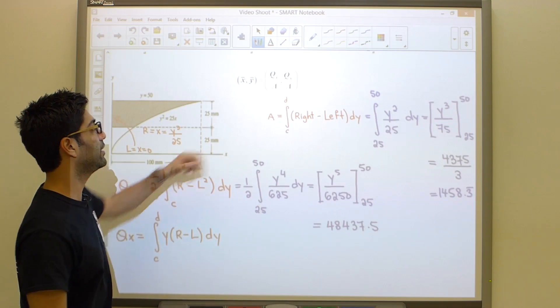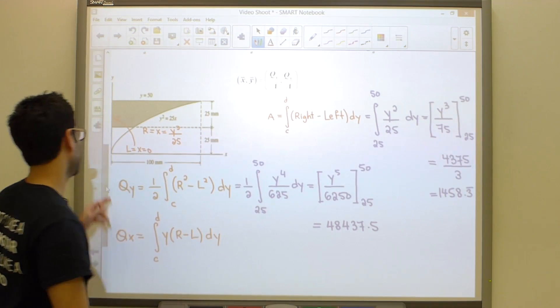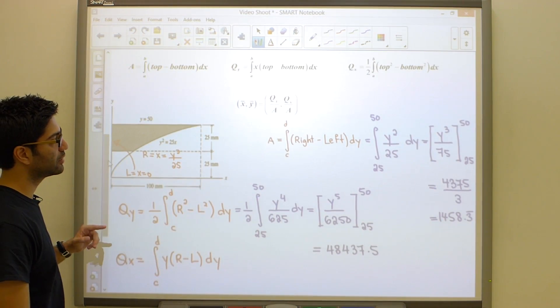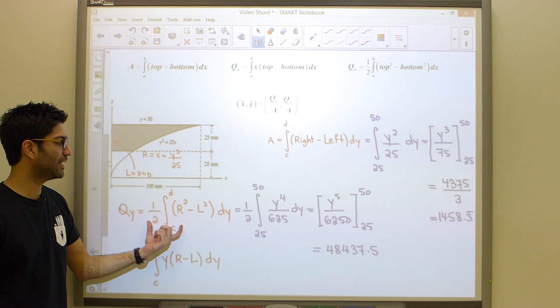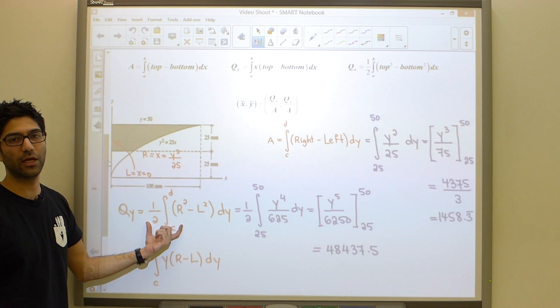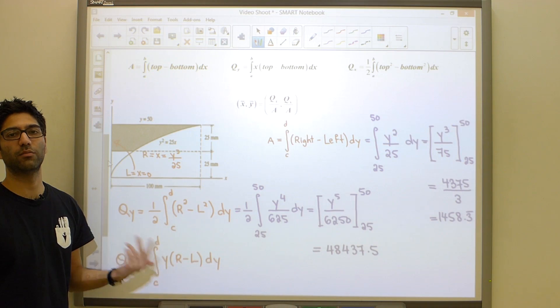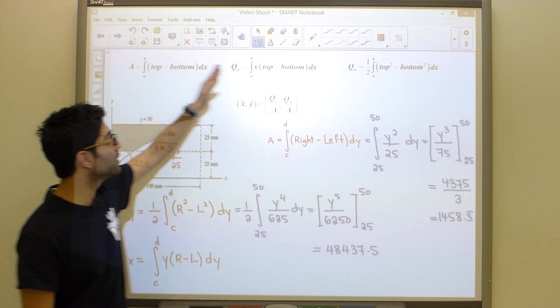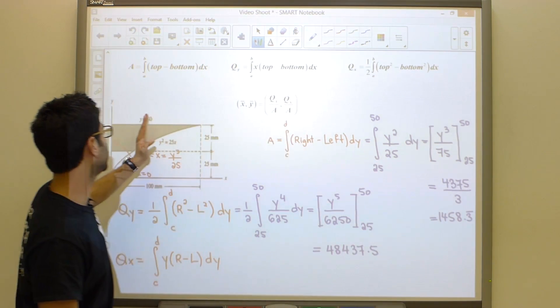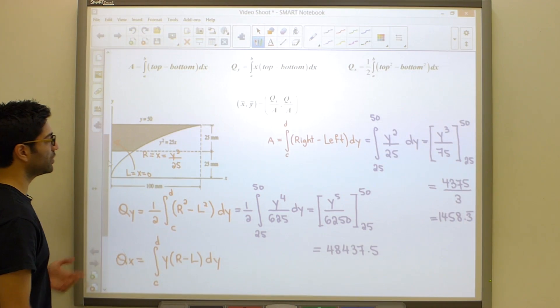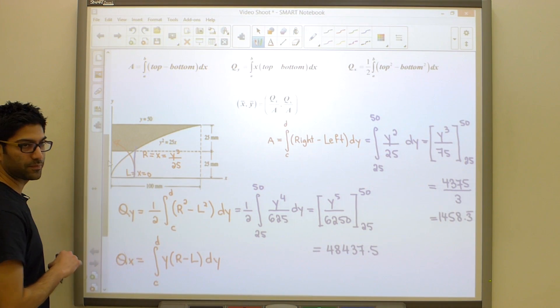Remember, x bar is just Qy over A. You just have to be careful that your Qy becomes this new formula when you're doing right minus left instead of top minus bottom. Now, you could have continued using these, except you would have had to split your integral up into two, and you wouldn't even know where to do that.